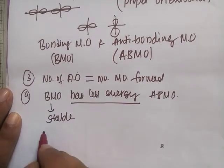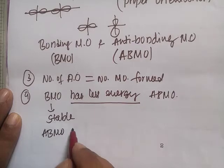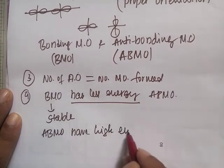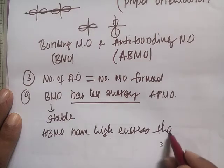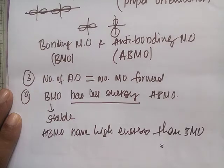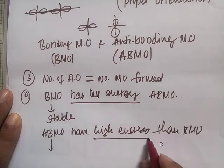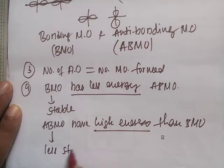Because the bonding molecular orbitals have less energy, they are said to be stable. The anti-bonding molecular orbitals have higher energy than the bonding molecular orbitals, and therefore they are less stable.